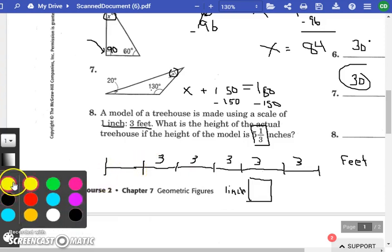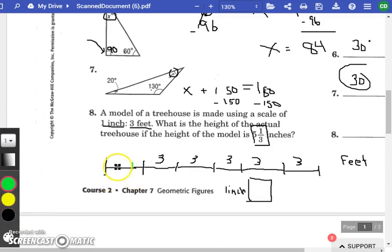Now we have one third of an inch. And so what I'm gonna do is I'm gonna break this up using a different color. So I'm gonna break this up into thirds. So what we have here is one foot, one foot, and one foot. That whole inch equals three feet. But they said 5 and 1/3 inches.